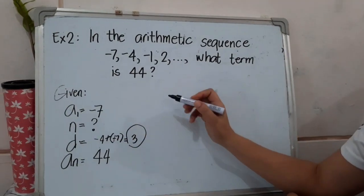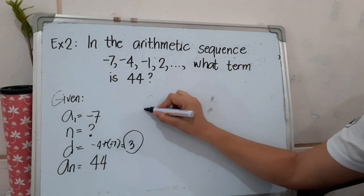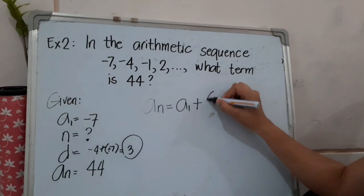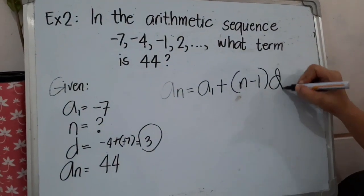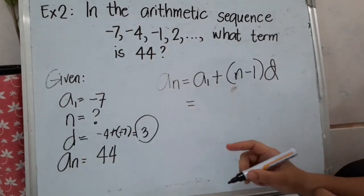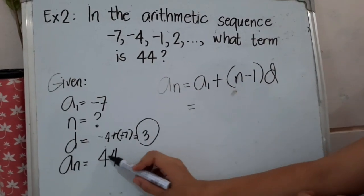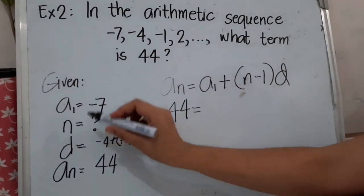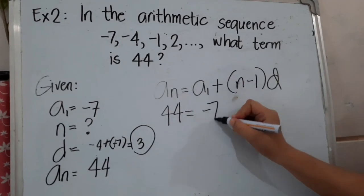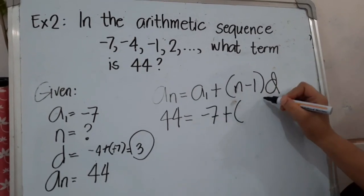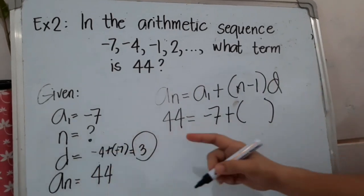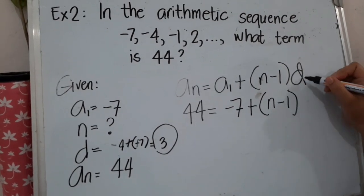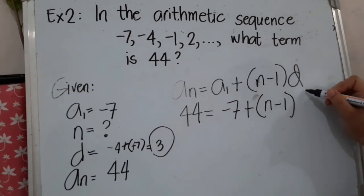With these given values we can now use our formula: a_n = a_1 + (n - 1) × d. We substitute: a_n becomes 44, a_1 is -7, n is unknown so we keep (n - 1), and d is 3. So: 44 = -7 + (n - 1) × 3.